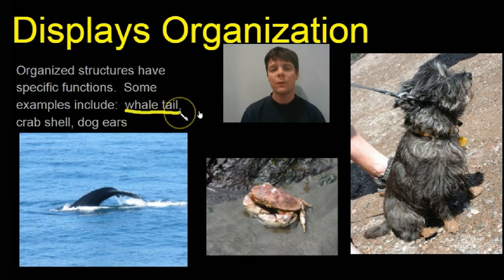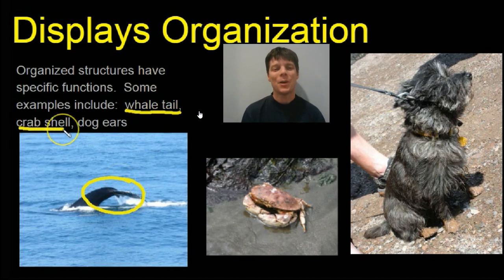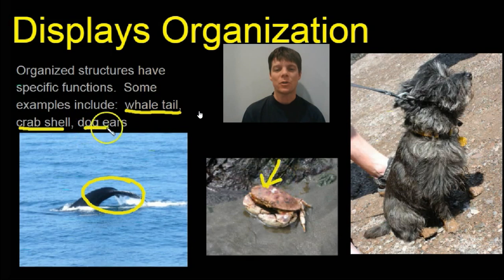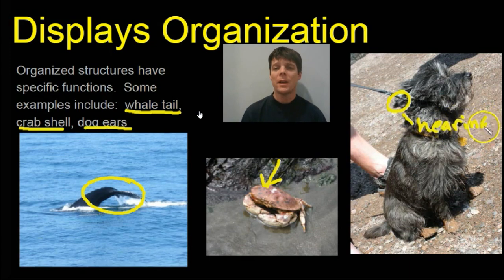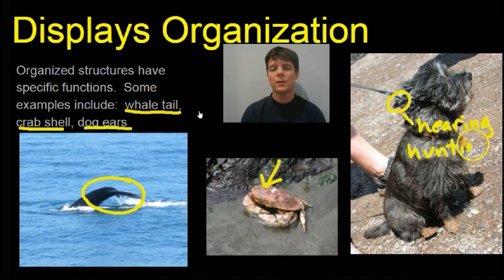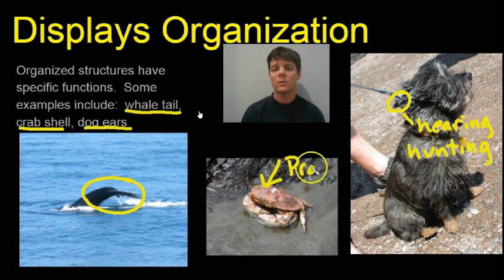I've selected three different living things: a whale, a crab, and my dog Kenzie. The whale has a tail — that's one of its specialized structures. The crab has a shell. And Kenzie, my cairn terrier, has ears. Cairn terriers were bred to hunt in rock piles called cairns. Because they couldn't see their prey, they had to have very well-developed hearing to find those vermin. So these ears are very organized structures which allow cairns to be good hunting dogs.